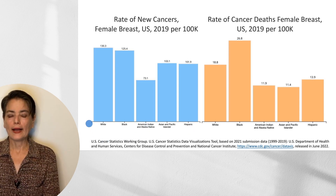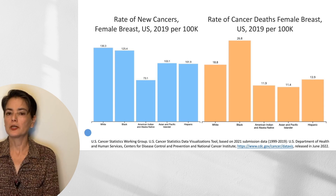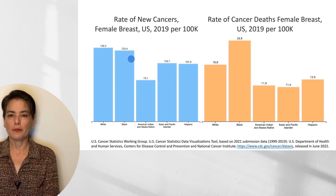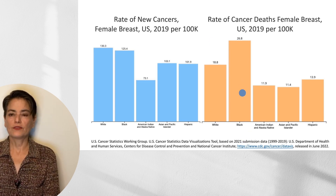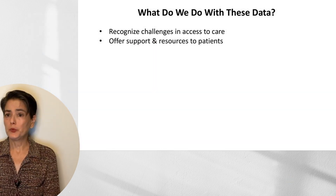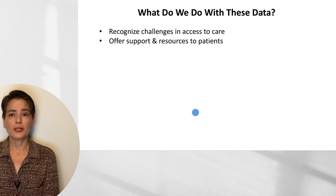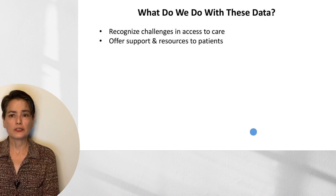With this in mind, let's look at CDC data on rates of new cancers and rate of cancer deaths in the female breast. The categories are white, black, American Indian, Asian Pacific Islander, and Hispanic. It is commonly stated that breast cancer is more common in European Americans compared to African Americans, but that gap has narrowed. However, when we look at the rate of cancer deaths, the highest mortality is in African Americans — a significant issue. We have to recognize the challenges our patients face in access to care and be sure that we offer support and resources to our patients.